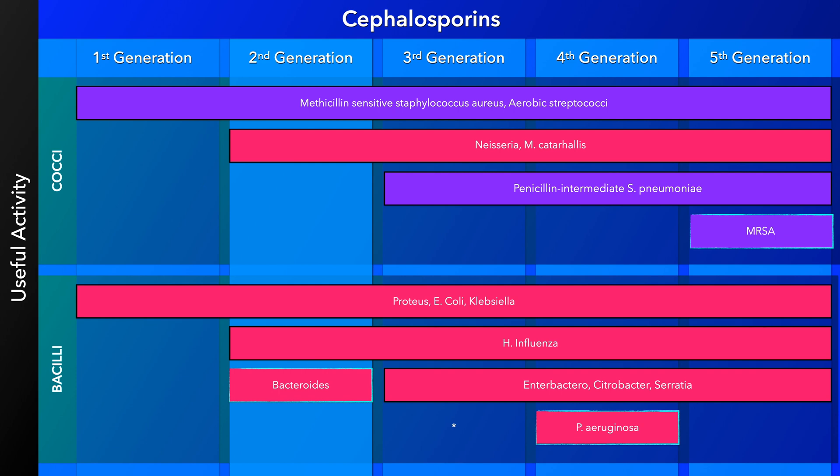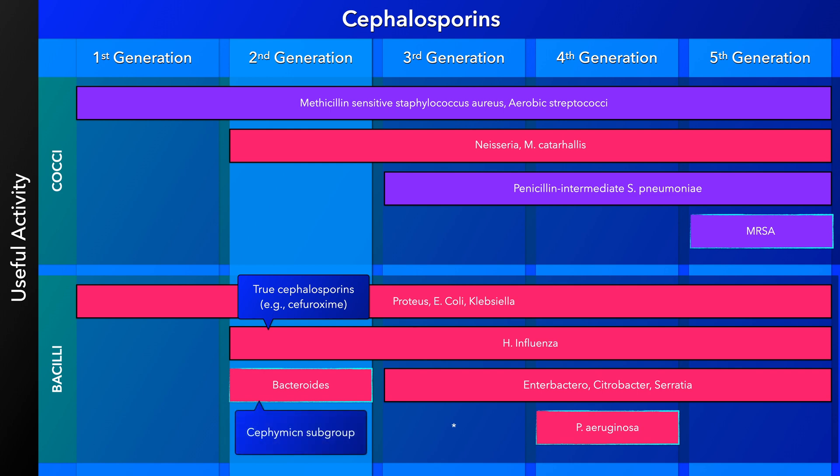The second generation of cephalosporins is somewhat heterogeneous in its antimicrobial spectrum of activity. The true cephalosporins, such as cefuroxime, provide better coverage against Haemophilus influenzae, while antibiotics from the cephamycin subgroup provide coverage against Bacteroides fragilis. Both subgroups provide coverage against gram-negative cocci and are more effective than the first generation cephalosporins against E. coli, Klebsiella pneumoniae, and Proteus mirabilis.